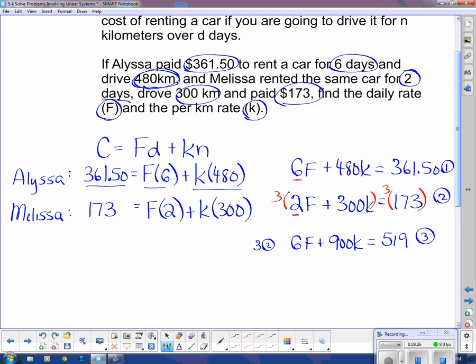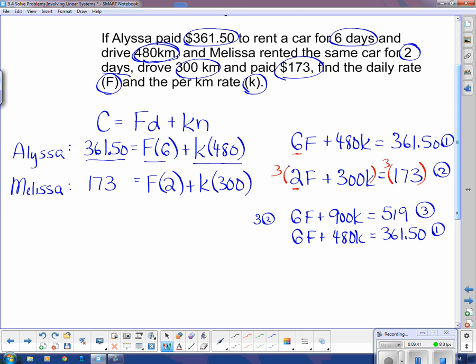I'm just going to rewrite equation 1 down. And now that I've written equation 1 down again, I haven't changed it, so I'm still going to call it 1. Now I'm going to subtract these two. I'm going to take my equation 3 and subtract equation 1. So the F's will go away when I do that. And 900 minus 480 is 420. So 420K equals 519 minus 361.50, so that is 157.50.